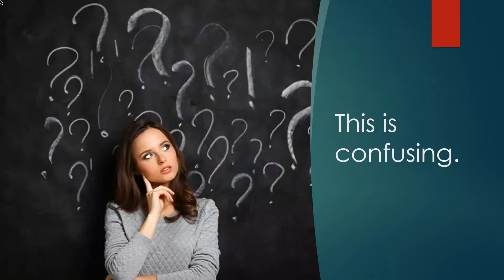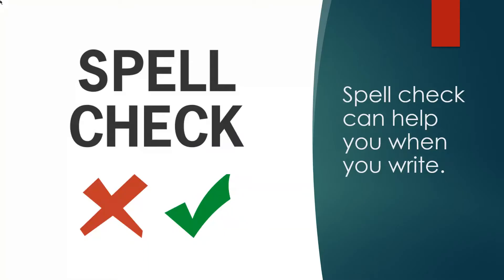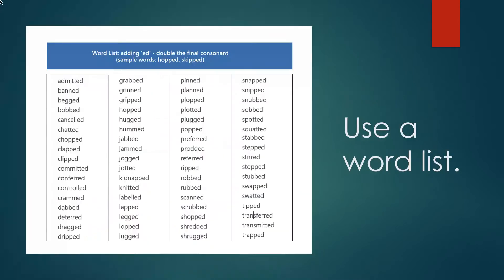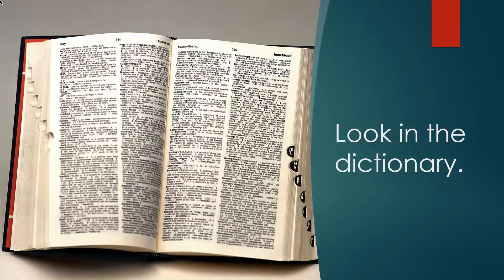So you may be thinking, this is confusing. And you're right, it is, even for native speakers sometimes. So what can you do? When you're writing, spell check can help you. You can use a word list, and I'll put a word list in the Kahoot course and in the YouTube video show notes. And also, you can look in the dictionary. That can be very helpful. I hope this video was helpful. Thank you very much.